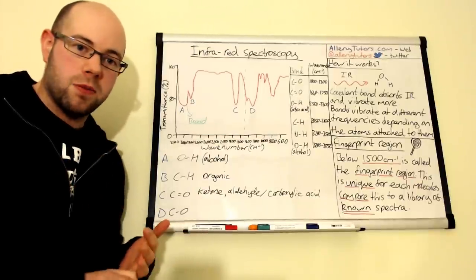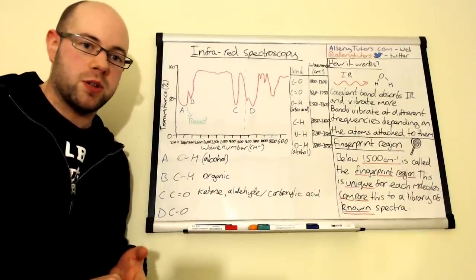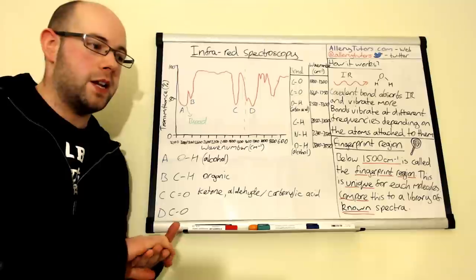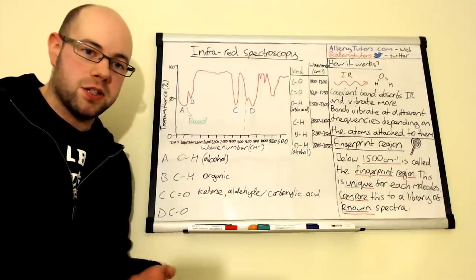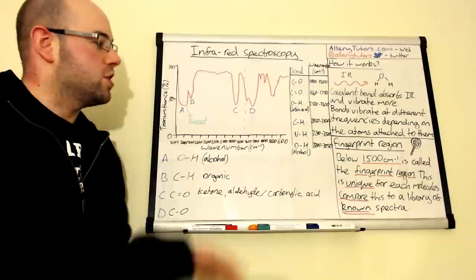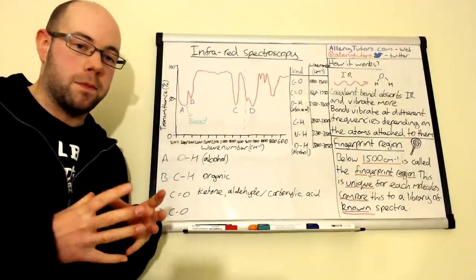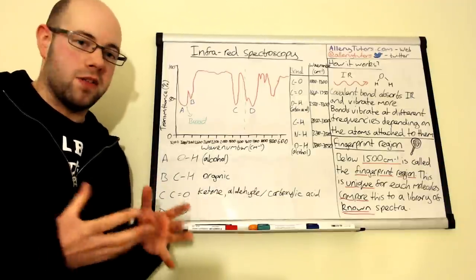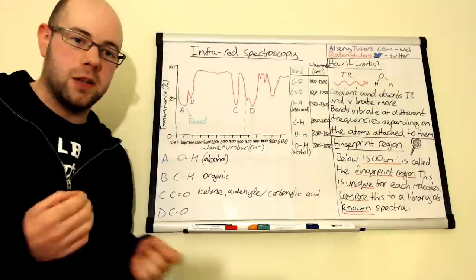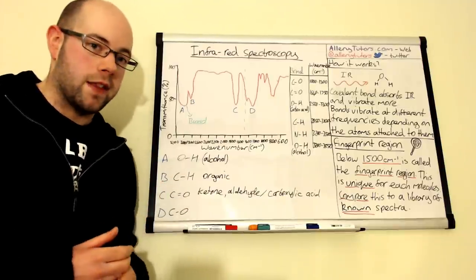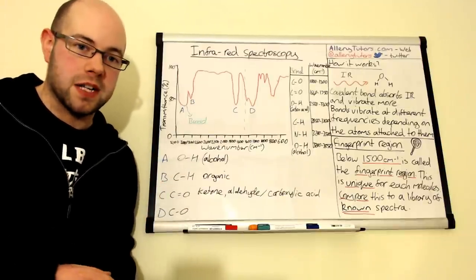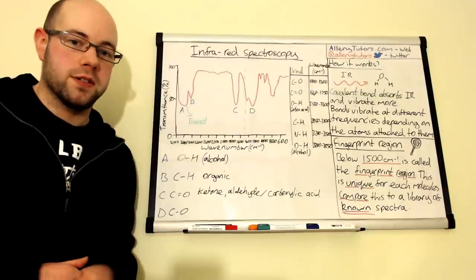They're normally used and worked with other types of spectroscopy and spectrometry as well. So you might use gas chromatography, you might use mass spectrometry, infrared spectroscopy, you might use NMR which is nuclear magnetic resonance. So you can use all of these to help piece together effectively what is like a jigsaw puzzle. You're finding little bits of information and these are used together and they're really powerful at identifying unknown substances.